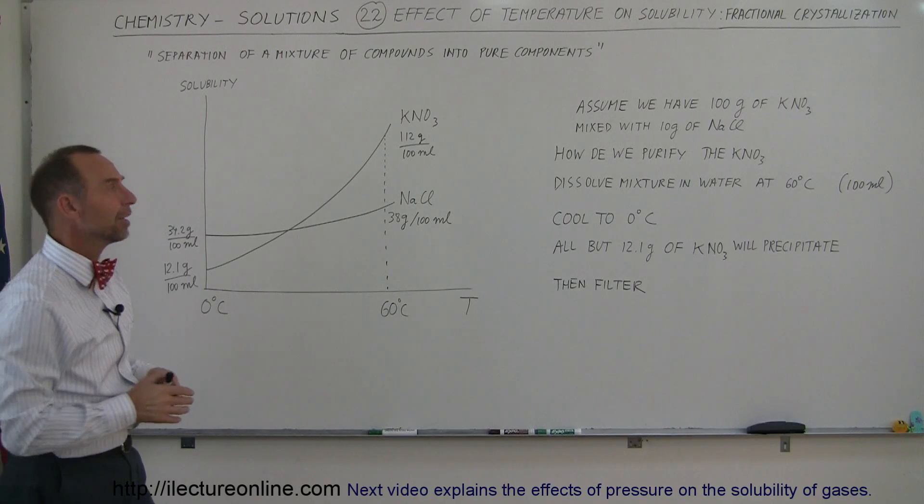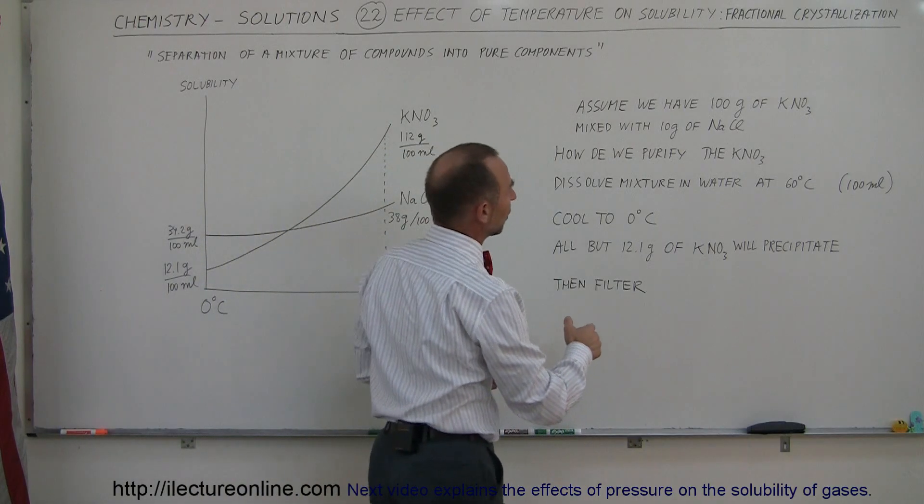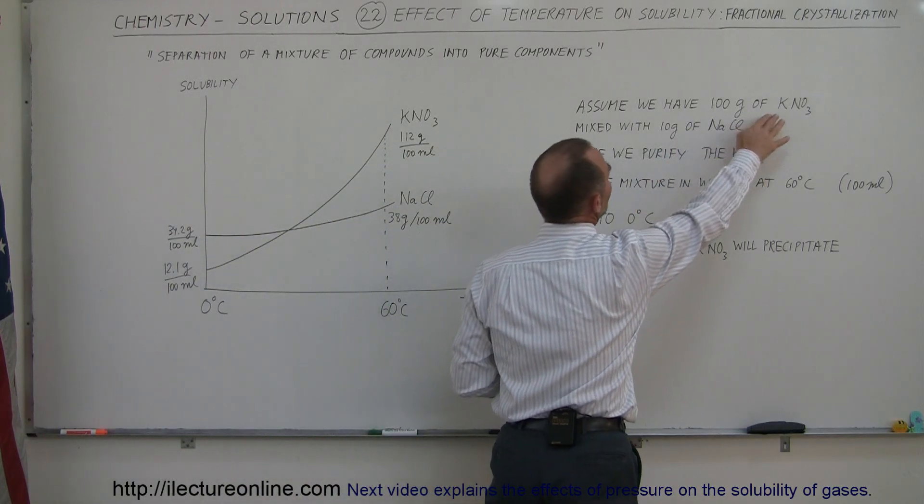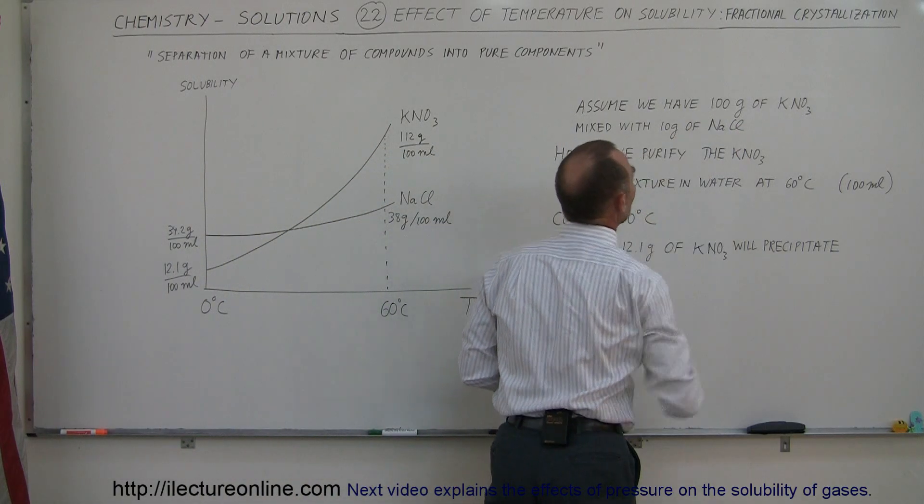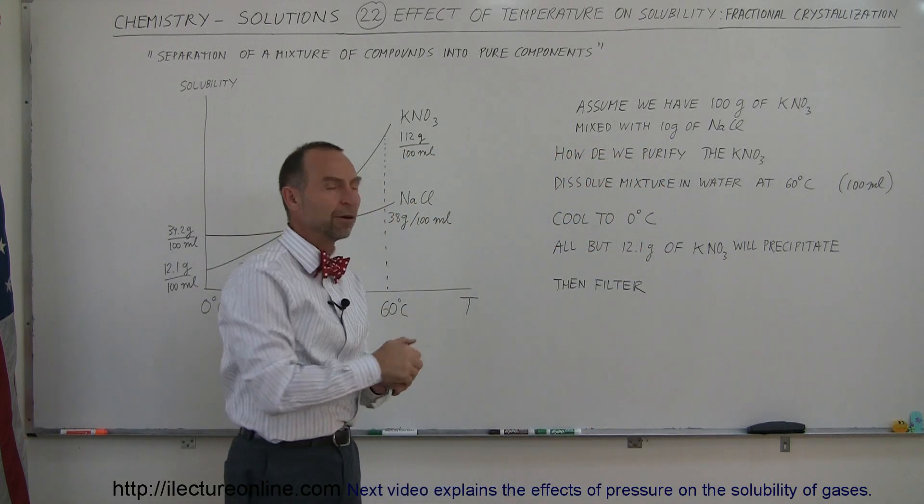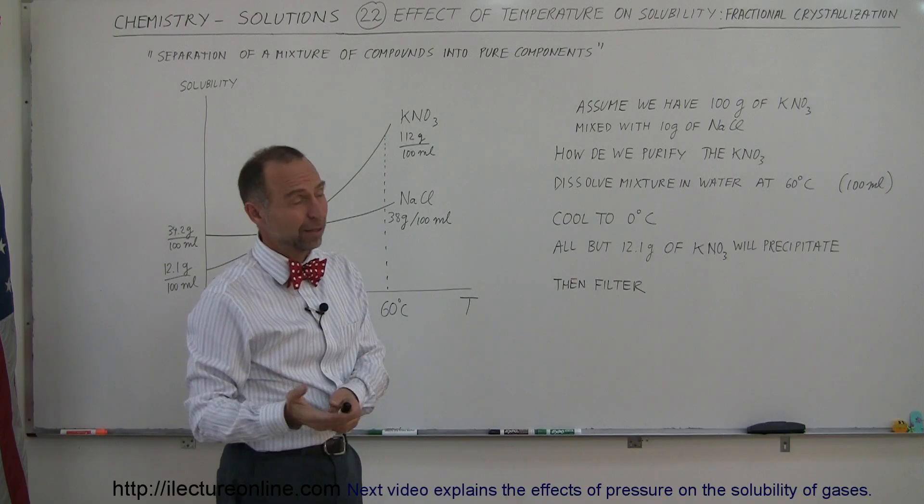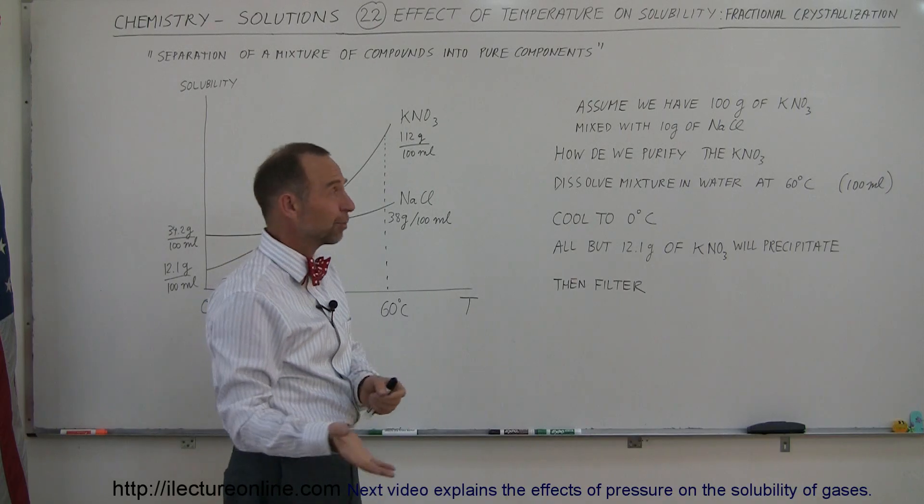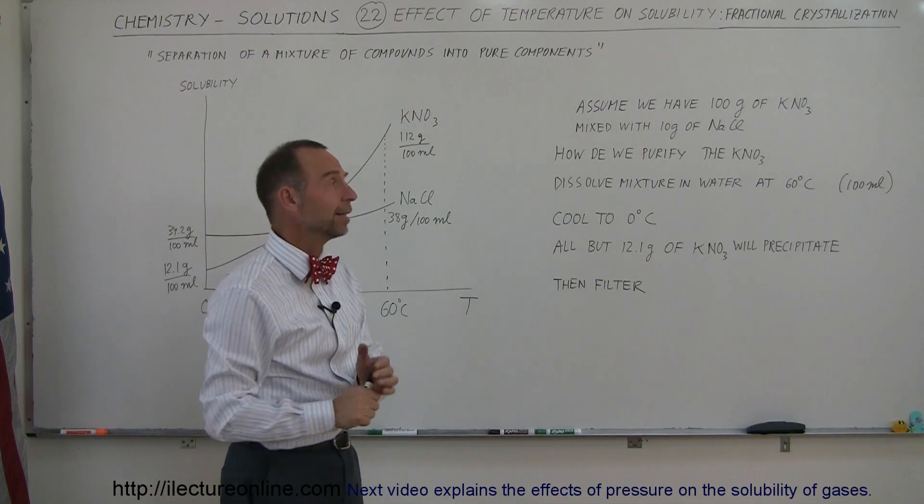Now what happens if we have a mixture? Let's say we have 100 grams of potassium nitrate mixed with 10 grams of sodium chloride, and we want to separate the potassium nitrate from the sodium chloride. We don't want the sodium chloride in there. How do we do that?